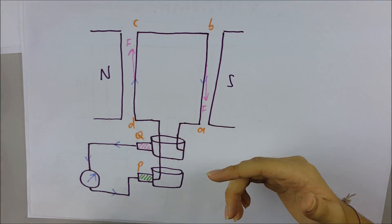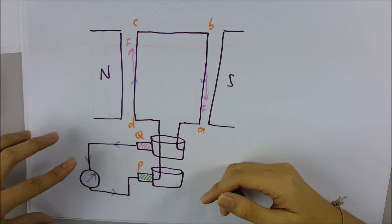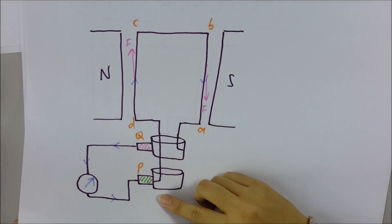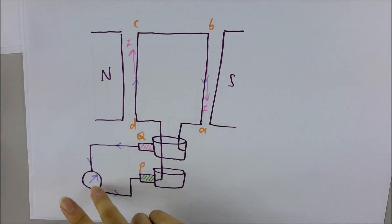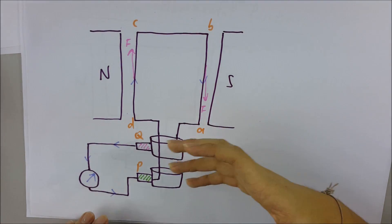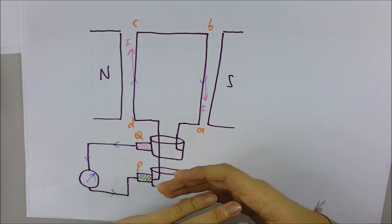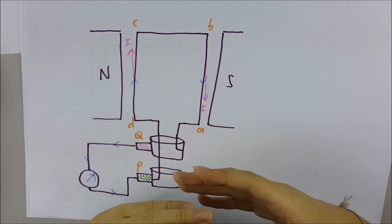The galvanometer shows a deflection in the opposite direction, which means it deflects to the right. After this position, the current decreases as it goes back to the vertical position again, and there will be no cutting of magnetic field lines.